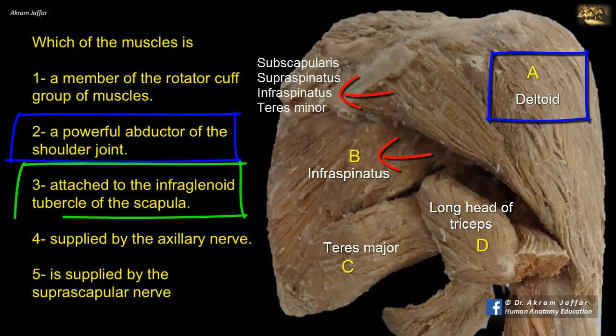Which of the muscles is attached to the infraglenoid tubercle of the scapula? That is the long head of triceps, which is attached to the infraglenoid tubercle of the scapula, outside the capsule of the joint. In contrast to the long head of biceps brachii, which is attached to the supraglenoid tubercle of the scapula inside the capsule of the joint.